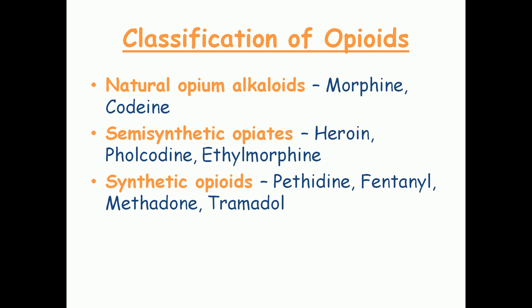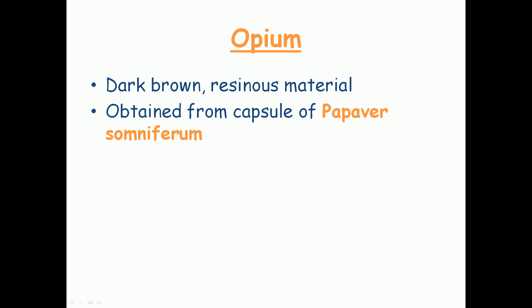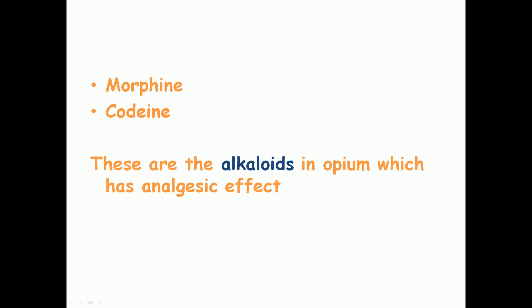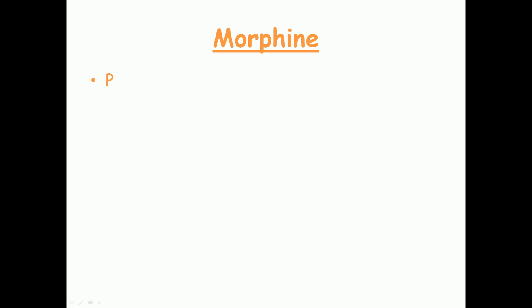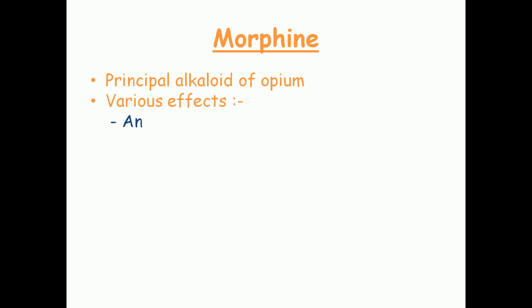Opium is a dark brown resinous material obtained from the capsule of Papaver somniferum. Natural opioids such as morphine and codeine are obtained from opium — these are the alkaloids in opium which have analgesic effects along with many other effects. Morphine is the principal alkaloid of opium.